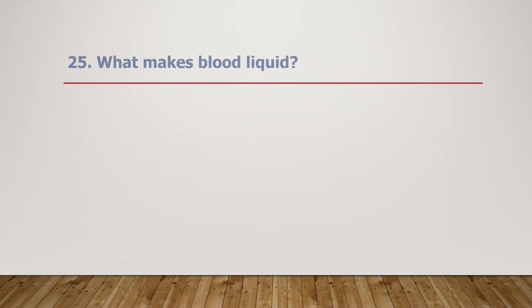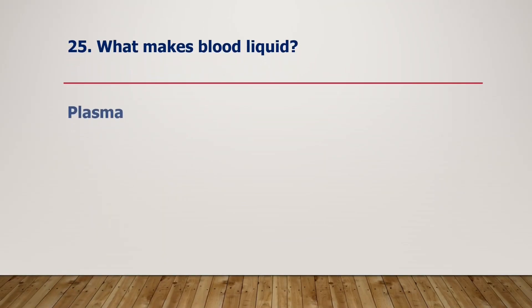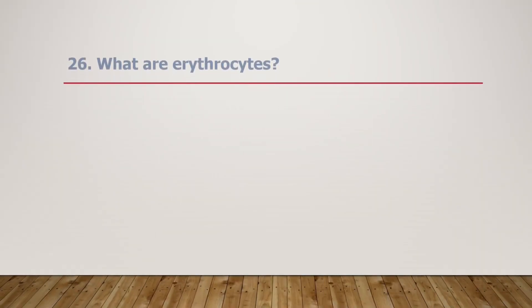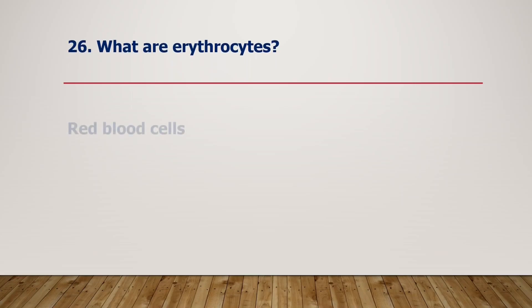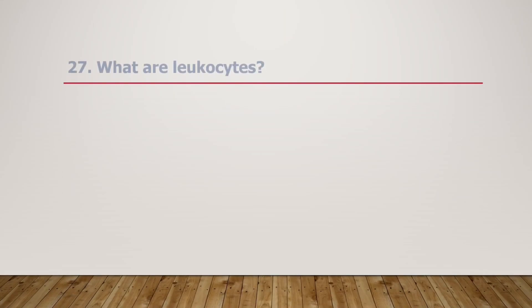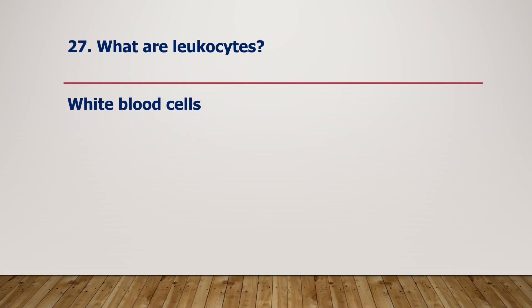What makes blood liquid? Plasma makes blood liquid. What are erythrocytes? Erythrocytes are red blood cells. What are leukocytes? Leukocytes are white blood cells.